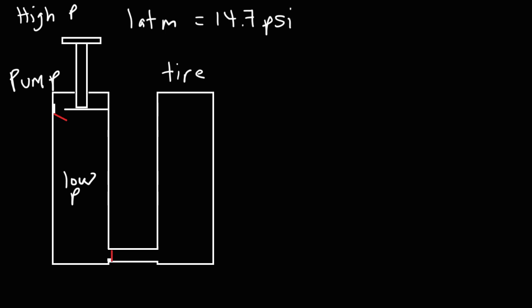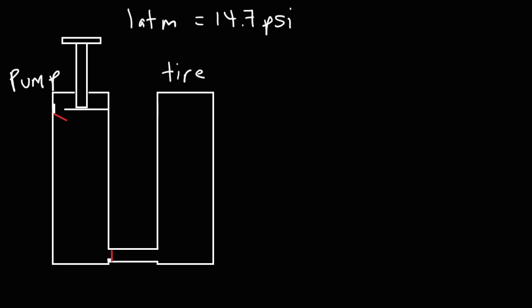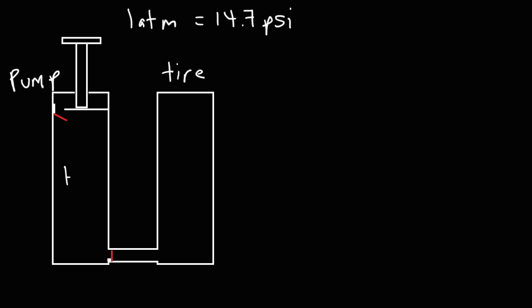For educational purposes, let's say the pressure inside the pump is higher than the pressure of the atmosphere. In this case, air will want to flow outward. As a result, some of the molecules will exert a force on the inlet valve, closing it — it will be in the closed position, preventing air from coming out. So the inlet valve allows air to flow into the pump, but it prevents air from flowing out of the pump.